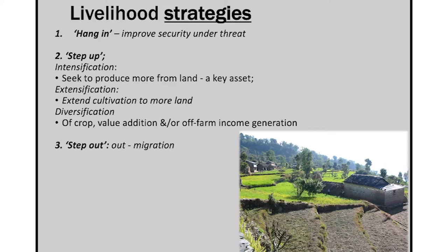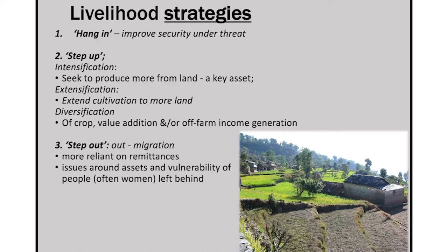You can do value addition or other kinds of income generation, like having a petty shop or some kind of enterprise or business. The third strategy is 'stepping out' — really about migration. People then become much more reliant on remittances. In economies like Uttarakhand in India or Nepal, because of the harsh terrain, men have migrated to Delhi, Bombay and the plains, leaving women-based economies much more reliant on the income that men send back home — what is called remittances.